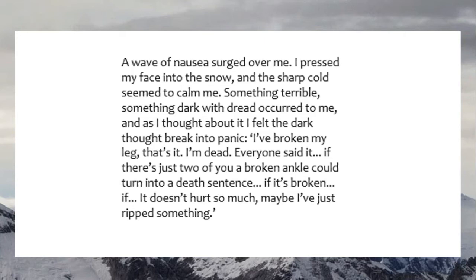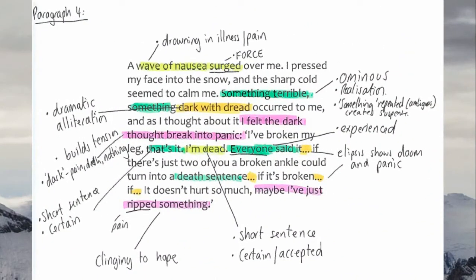The fourth paragraph: 'A wave of nausea surged over me.' The water image returns — a wave suggests he's almost drowning in sickness. The verb surge suggests it came forcefully and powerfully. Then: 'Something terrible, something dark with dread occurred to me.' The repetition of 'something' is quite ambiguous — it creates suspense. He doesn't say what — it's just 'something.' It's vague but also ominous, a realisation that something really bad is going to happen.